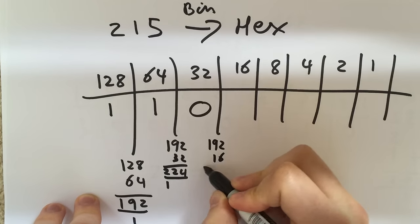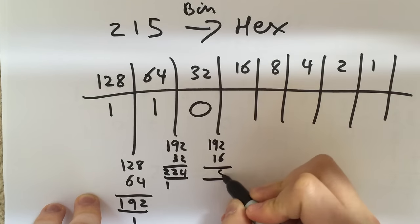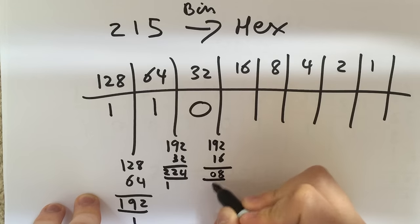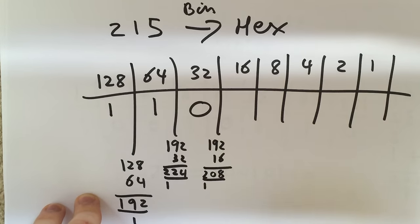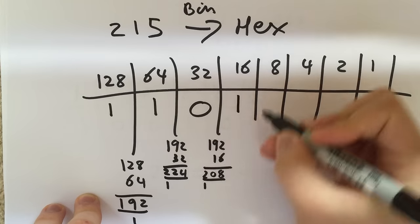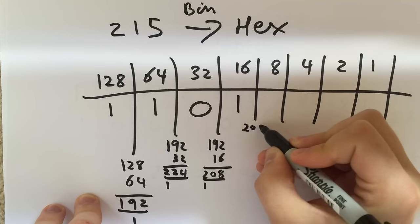192 add 16, 2 add 6 is 8, 9 add 1 is 10, 208. Yep, that works for me. So I'm going to say I will have the 16 and that gets me up to 208.